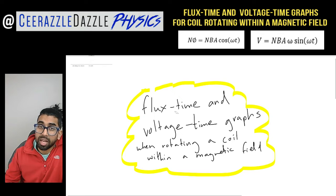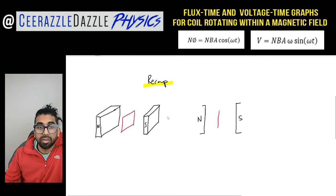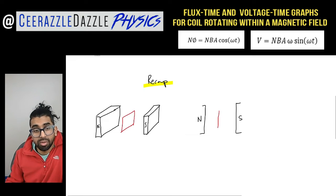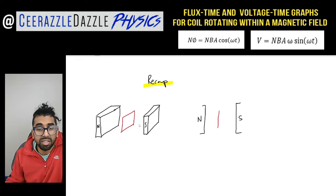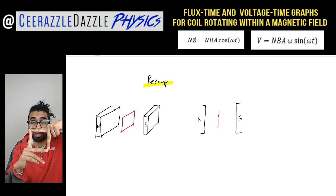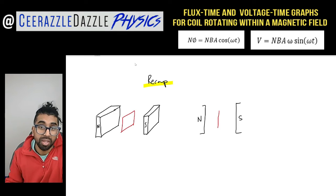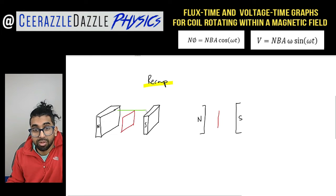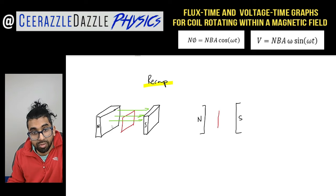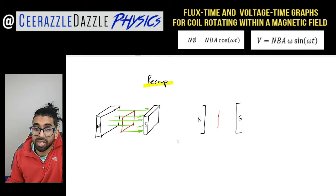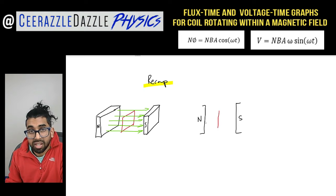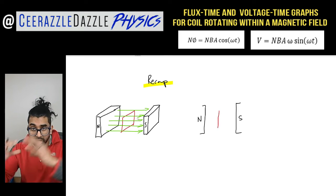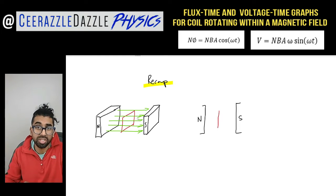Let's have a quick recap on what flux actually is. Over here I've got a north pole and a south pole — two sides of a magnet — and we've got a square coil placed within the field. The field lines go out of the north and into the south. This diagram on the right-hand side is a sideways view. Imagine you looked at that head-on — what would you see?